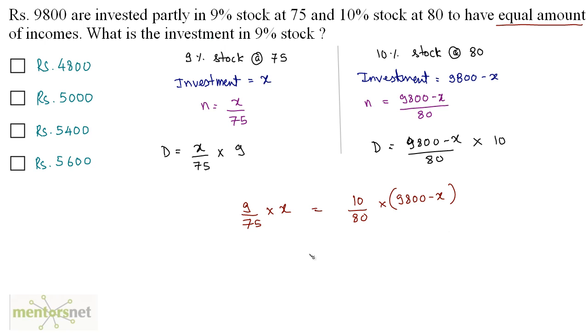Now, if you solve this complete equation, which I am not going to solve to save time, you will get the value of X as 5000. And that was the amount that was invested in the 9% stock. So the answer is option B.